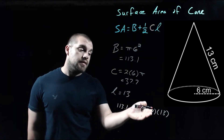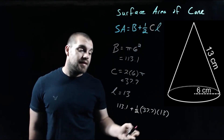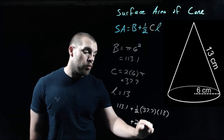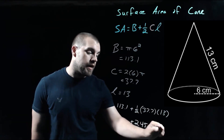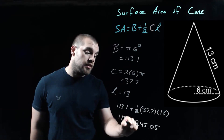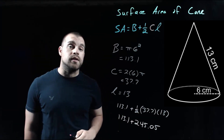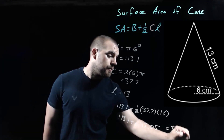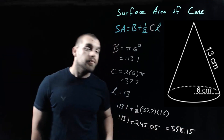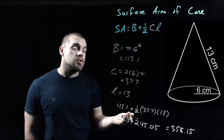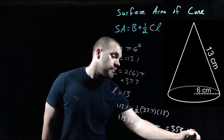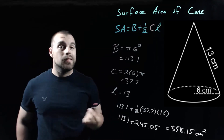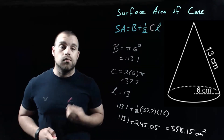One half times 37.7 times 13 gives us 245.05. So we take 113.1 and add 245.05, and we get about 358.15. We do need to throw a label on this — our measurements were given in centimeters, so this is going to be centimeters squared. That's going to be it for this video. Thanks for watching.